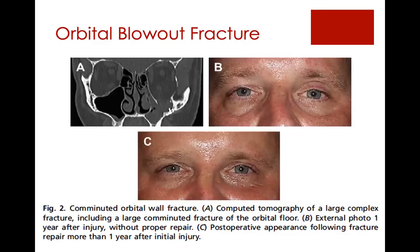Moving on to orbital fractures. In oculoplastics, we typically deal with isolated blowout fractures — either medial wall or the floor of the orbit. Some oculoplastic surgeons deal with more complex facial fractures, but often we partner with hematology and facial plastics to address those. This is an example of a large orbital floor blowout fracture, showing enophthalmos with superior sulcus hollowing. You can see the eye is sunken in, and that difference in appearance of the soft tissues is restored after you repair the fracture.